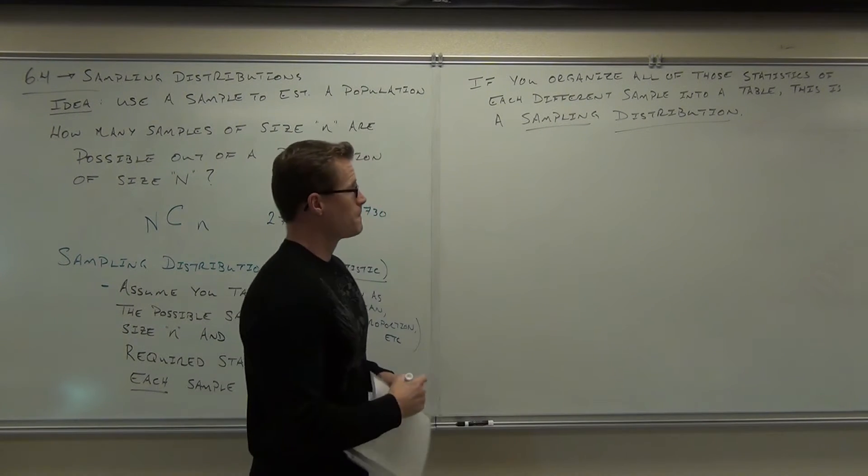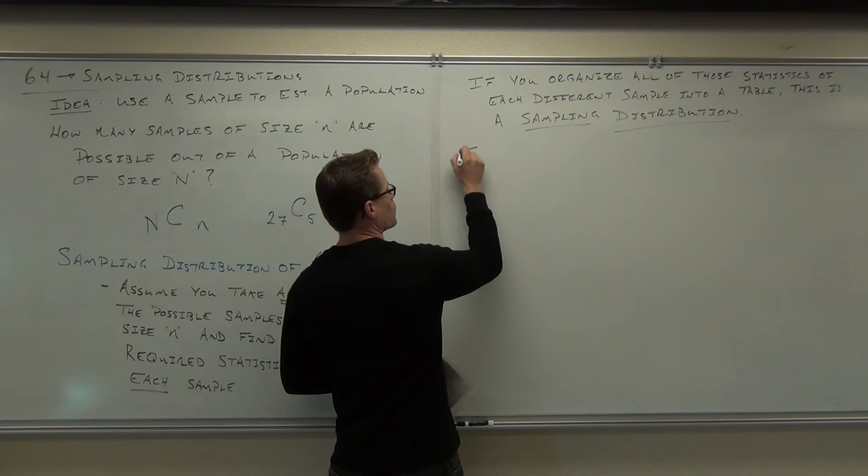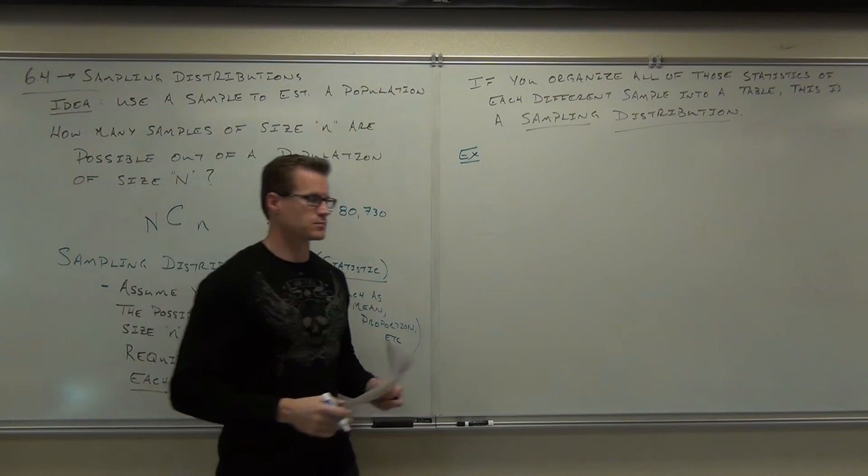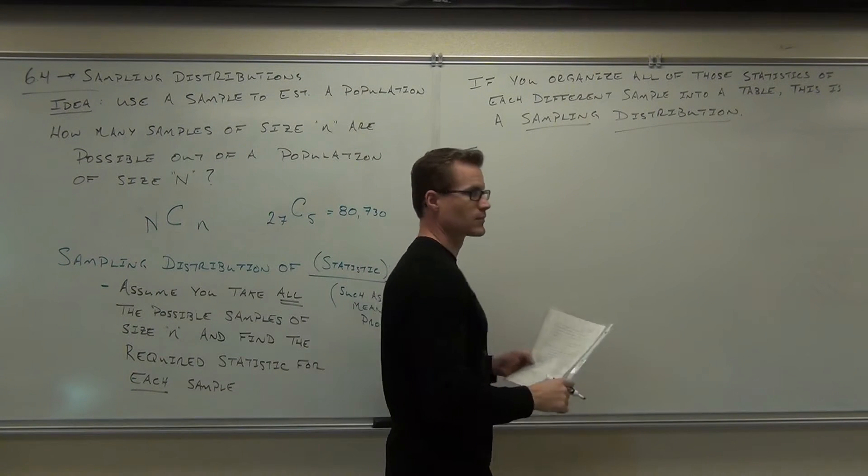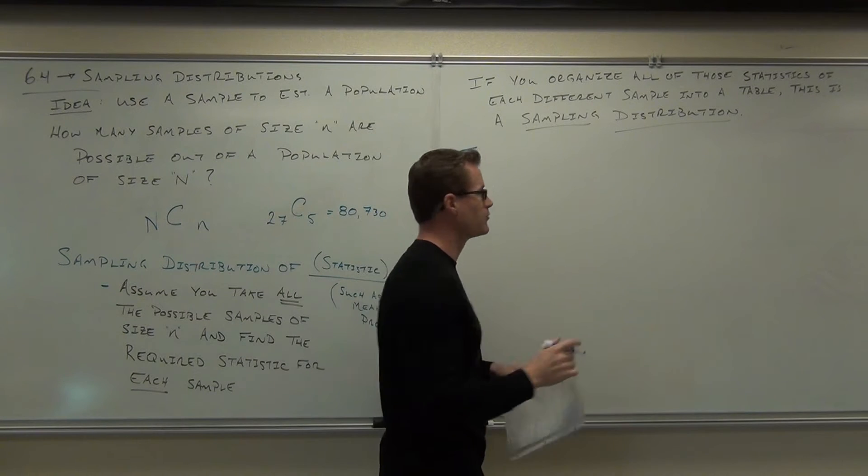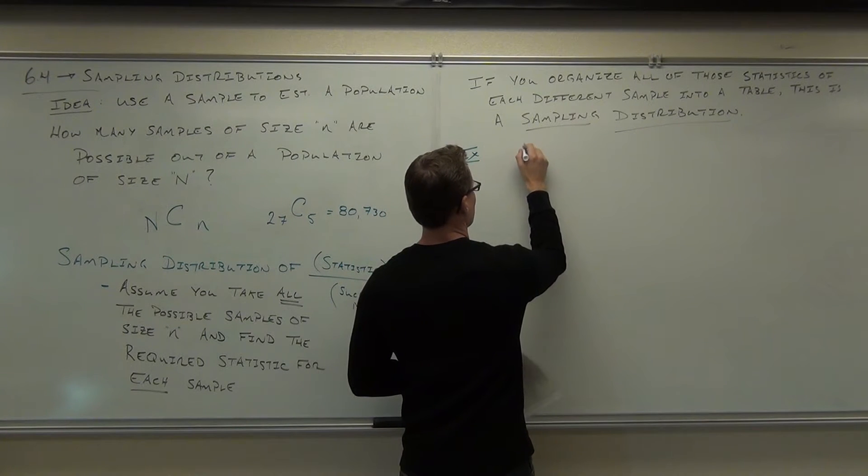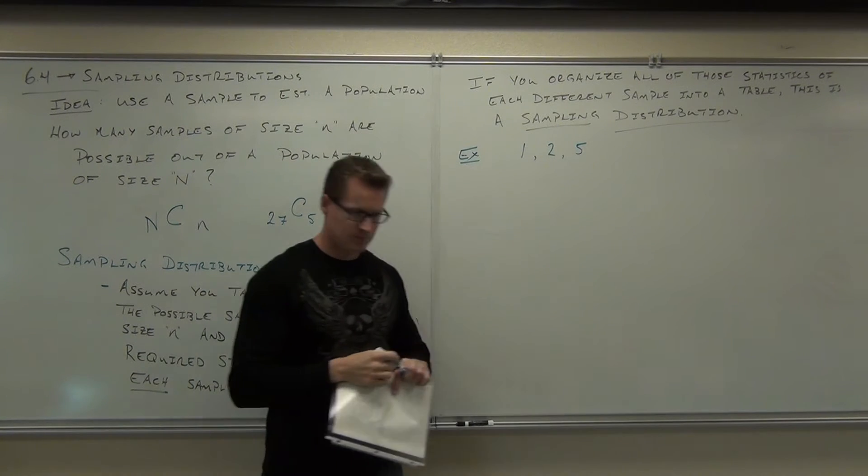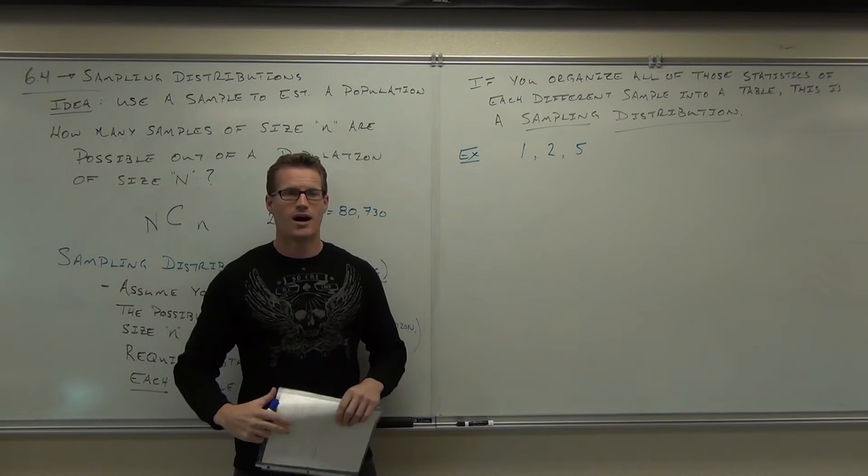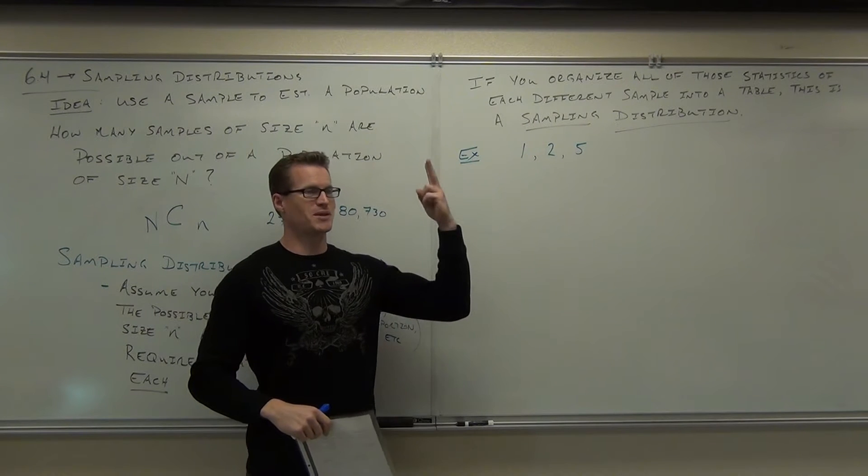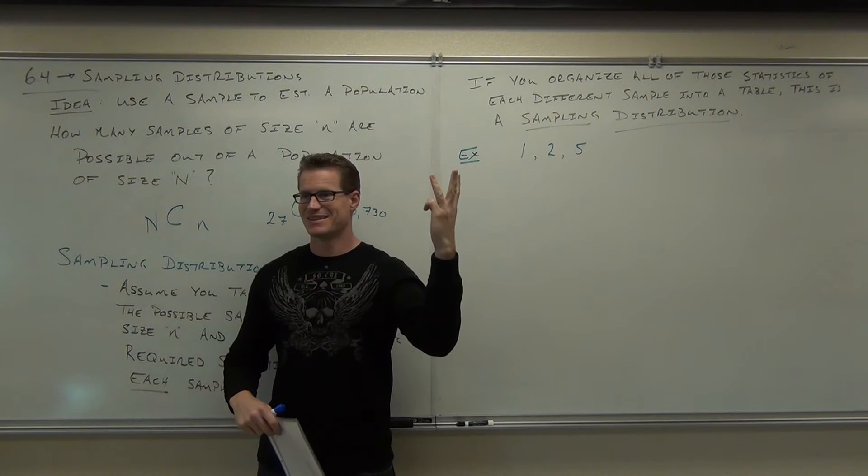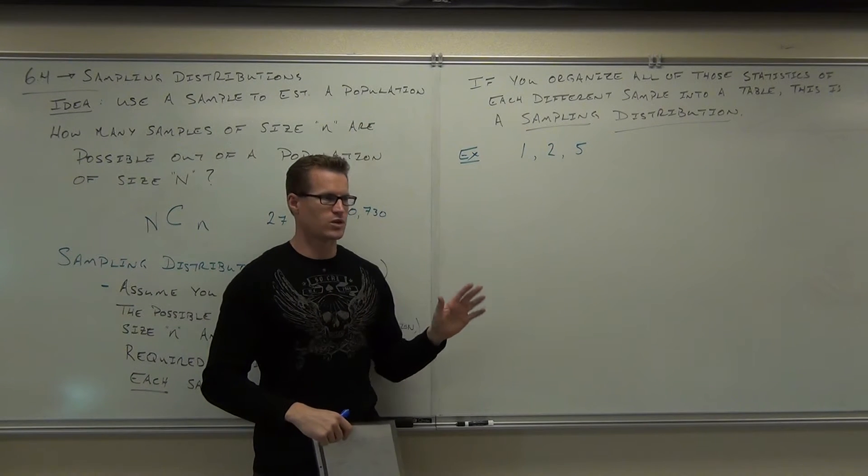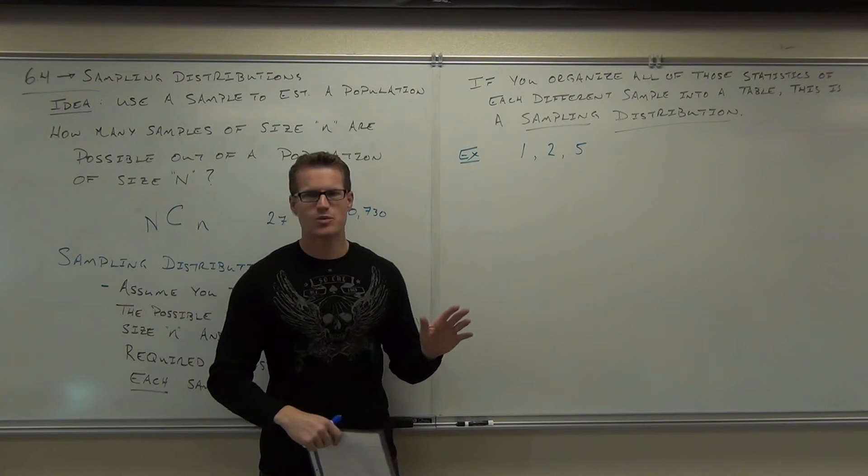We're going to pretend that in the whole world there are only three numbers. The only three numbers you can possibly have are one, two, or five. So if you started counting, you'd go, I'm one years old, then I'm two years old, then I'm five years old, and that's it. No other numbers exist.